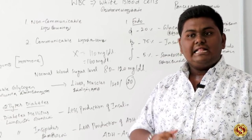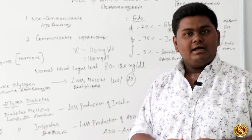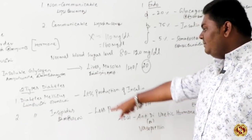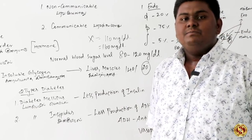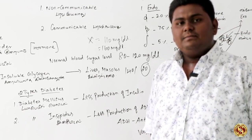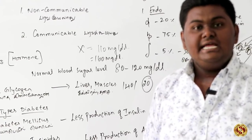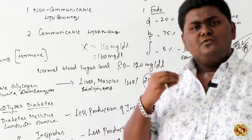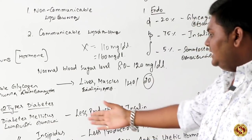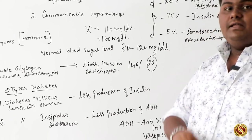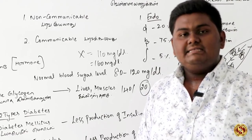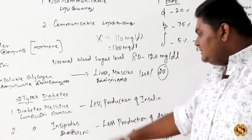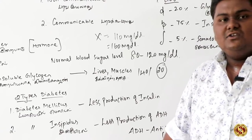The hormones are going to be excreted in the urine. If you have ADH hormone deficiency, you will be affected by the second type of sugar disorder: diabetes insipidus. In diabetes insipidus, the patient produces dilute urine in large amounts. Less production of insulin causes diabetes mellitus; less production of ADH causes diabetes insipidus. These are very important exam questions.